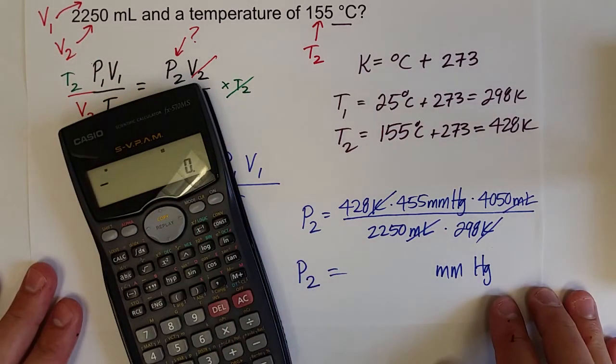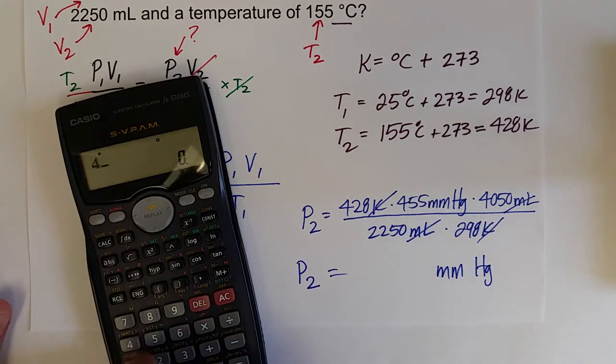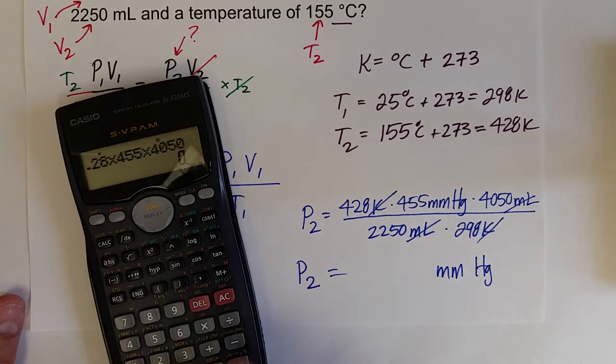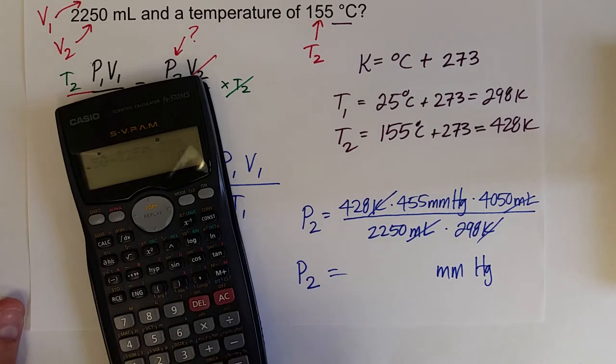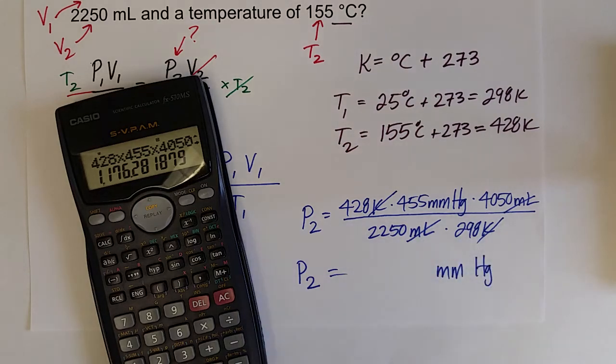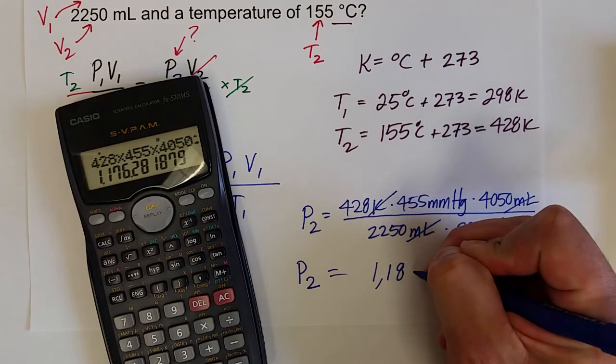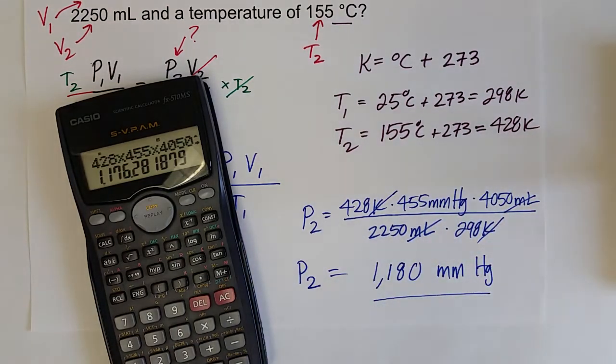And what we need to do is take 428 times 455 times 4050 divided by 2250 divided by 298 equals 1176 millimeters of mercury. And we're probably going to cut this down to three significant figures, so we'll have to go 1180 millimeters of mercury.